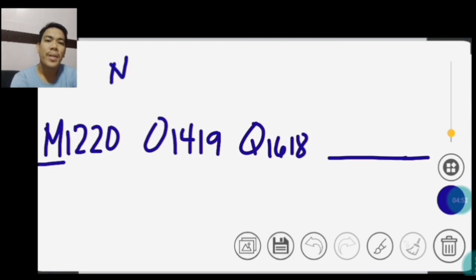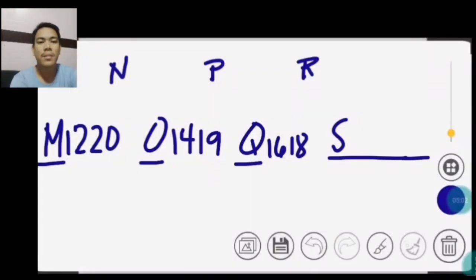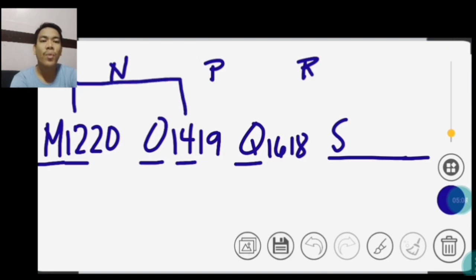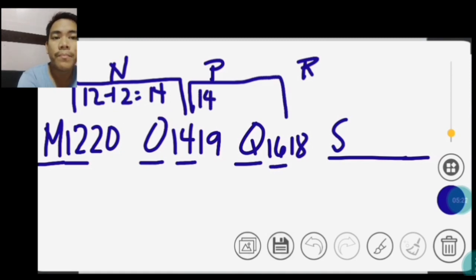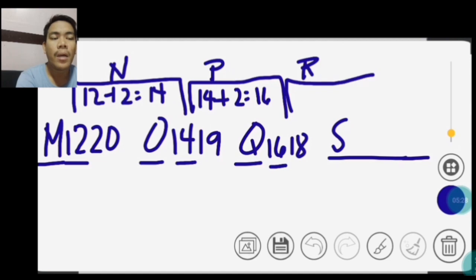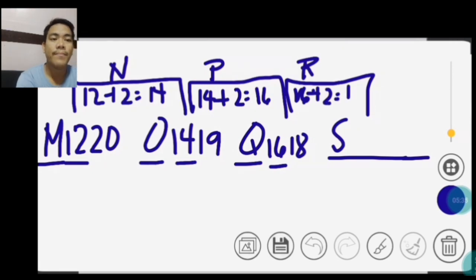Next, paano kung merong combination ng number at letter? So, M1220, N1419, O1618. So, M, N, O, P, Q, R — ang letter na answer ay S. So, tignan mo na natin yung mga first 2 digits. So, 12 at 14. So, 12 plus 2 equals 14. Next, ang 14 at ang 16. So, 14 plus 2 equals 16. Then, 16 plus 2 equals 18. So, 18.